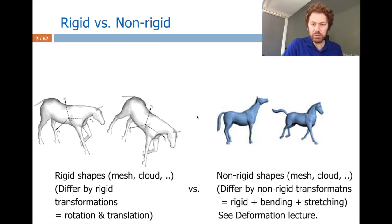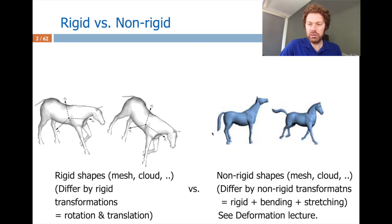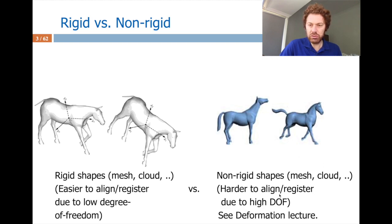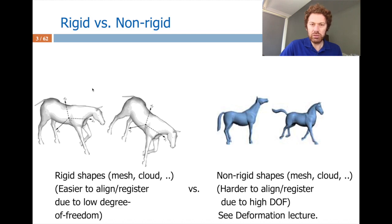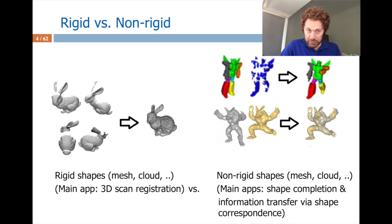In the non-rigid case we have rigid transformations as well as bending and stretching — those types of other transformations — and consequently it has a higher degree of freedom, which makes the problem hard to deal with. In our case today we will only be dealing with a low degree of freedom consisting of rotation and translation.